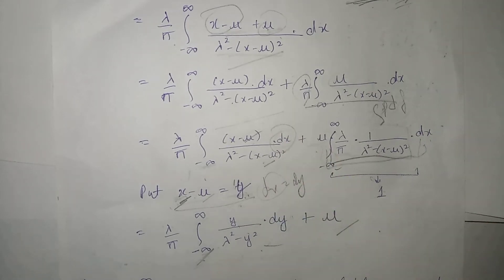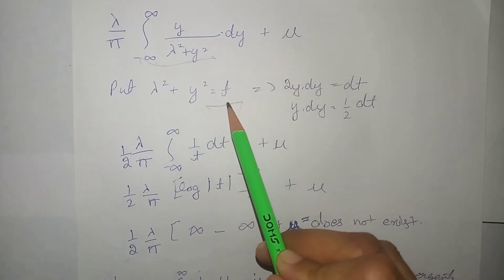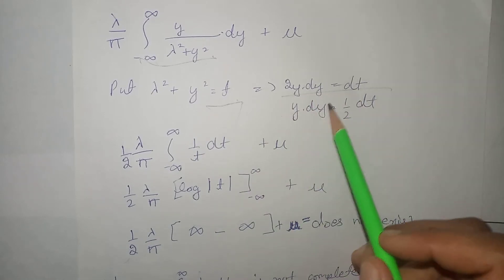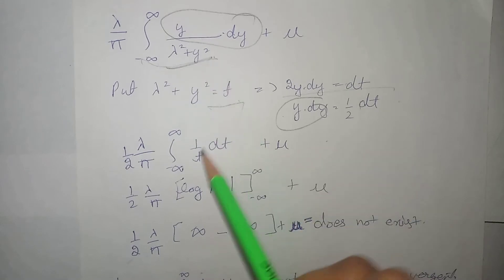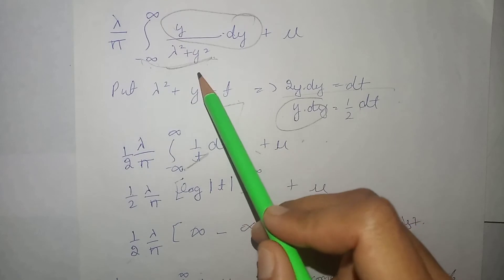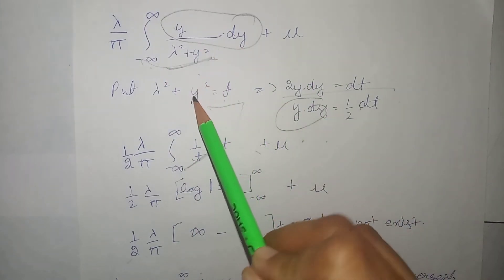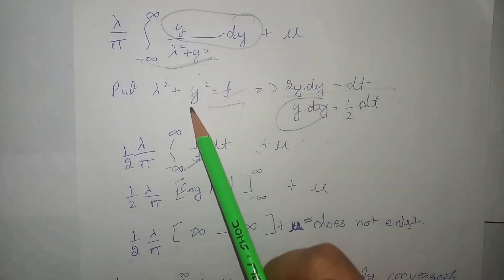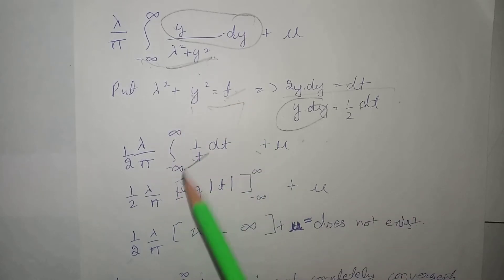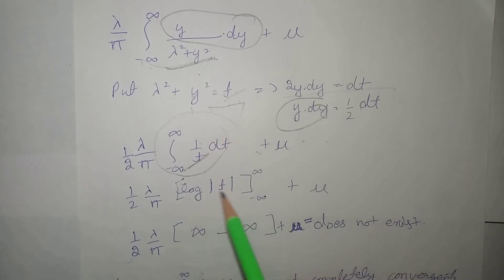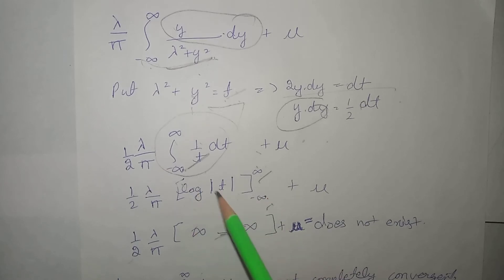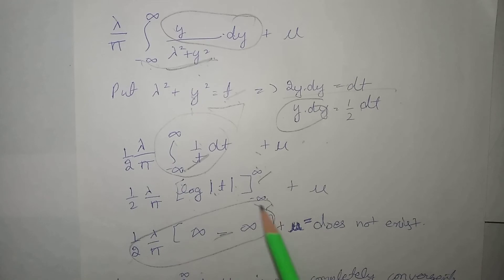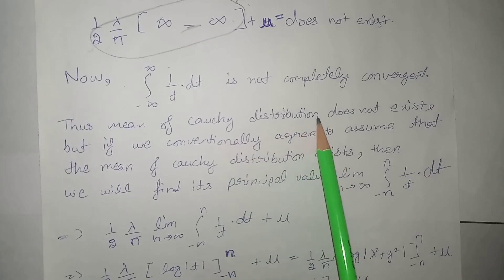Next, putting lambda squared plus y squared equal to t, differentiating both sides gives 2y dy equals dt, so y dy equals half dt. Now evaluating the limits and integrating, we get log modulus of t evaluated at the limits. Substituting the limits, since log of infinity is infinity, this term becomes infinity, and infinity plus mu equals infinity — which does not exist. So the mean of the Cauchy distribution does not exist.